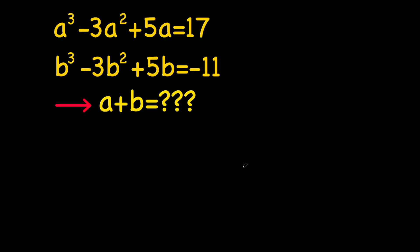Hey there, guys. In this video, we're going to be solving the 2002 Sweden Math Olympiad problem where we have a symmetrical system of equations with two equations and two variables. Notice that both of these equations are in a single variable and we don't have any relation between a and b, so we need to create that relation by combining both of these equations. This is a really cool problem and we're supposed to evaluate a plus b, so let's go ahead and do that.